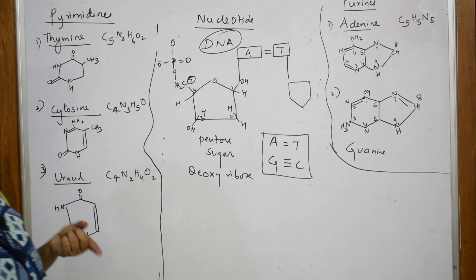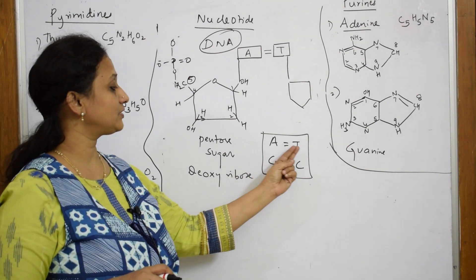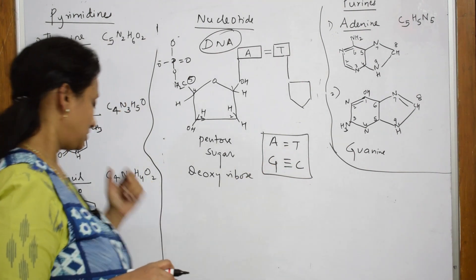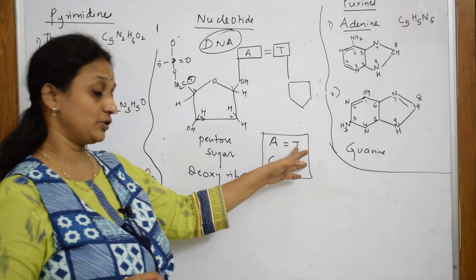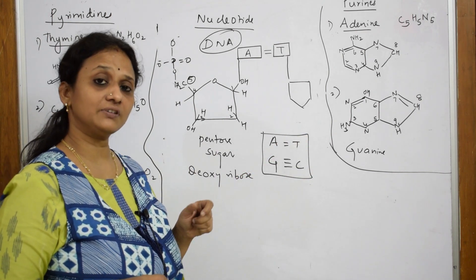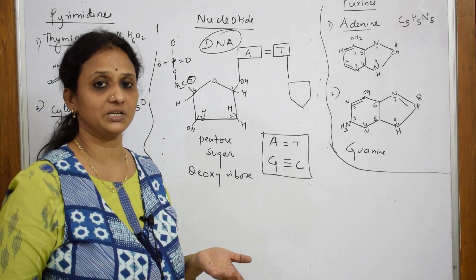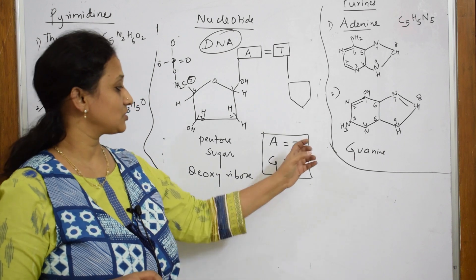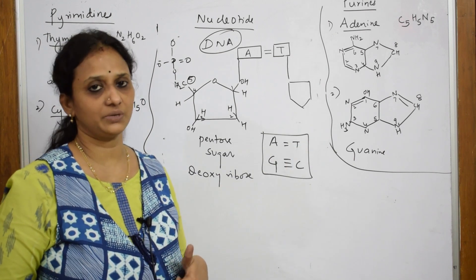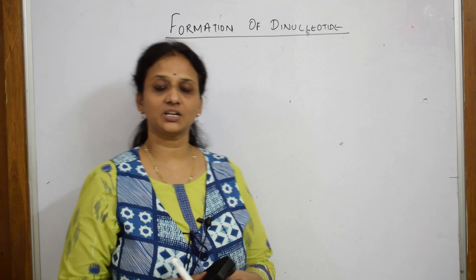But in the case of RNA, adenine does not link with thymine. Instead of thymine, you have uracil. So you do not have thymine in RNA — you have only uracil in combination. Remember that.